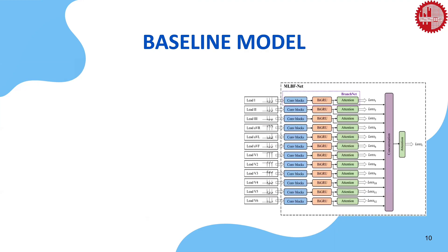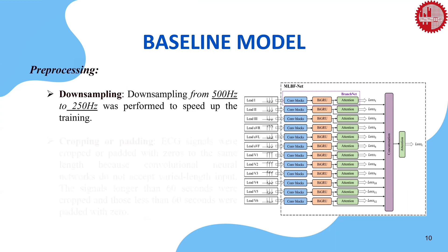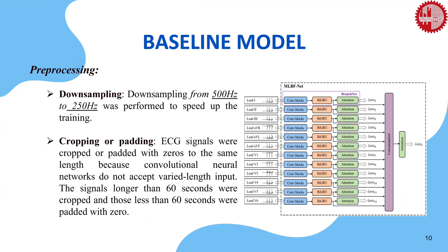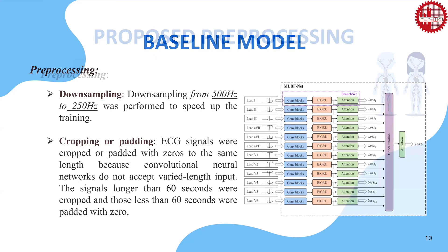After extracting features from each ECG lead individually, they concatenated those features and applied attention to the concatenated features. In the pre-processing part, they downsampled the signal from 500 Hz to 250 Hz to speed up the process. Since ECG records have different lengths but CNN classification models need inputs of equal length, they used zero-padding to equalize all samples to 60 seconds.